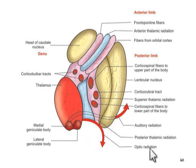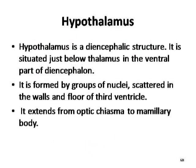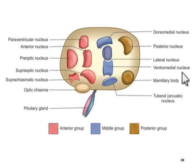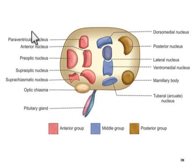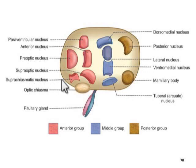The next is the middle group of nuclei, also known as the tuberal group of nuclei. In this diagram the blue-colored nuclei are the middle or tuberal group. These include the dorsomedial nucleus, intermedial nucleus, lateral nucleus, and arcuate nucleus, also known as the tuberal nucleus.